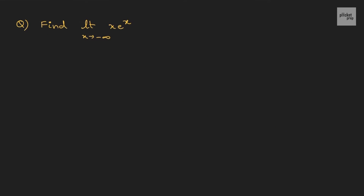Find limit x tends to negative infinity of x·eˣ. Again, it is pretty clear — this is infinity into 0, which falls into the second category of indeterminate forms. Therefore, let me change the expression. I can write this as limit x tends to negative infinity of x·eˣ divided by 1/x. Now this is in 0/0 form, so we can use L'Hospital's rule.